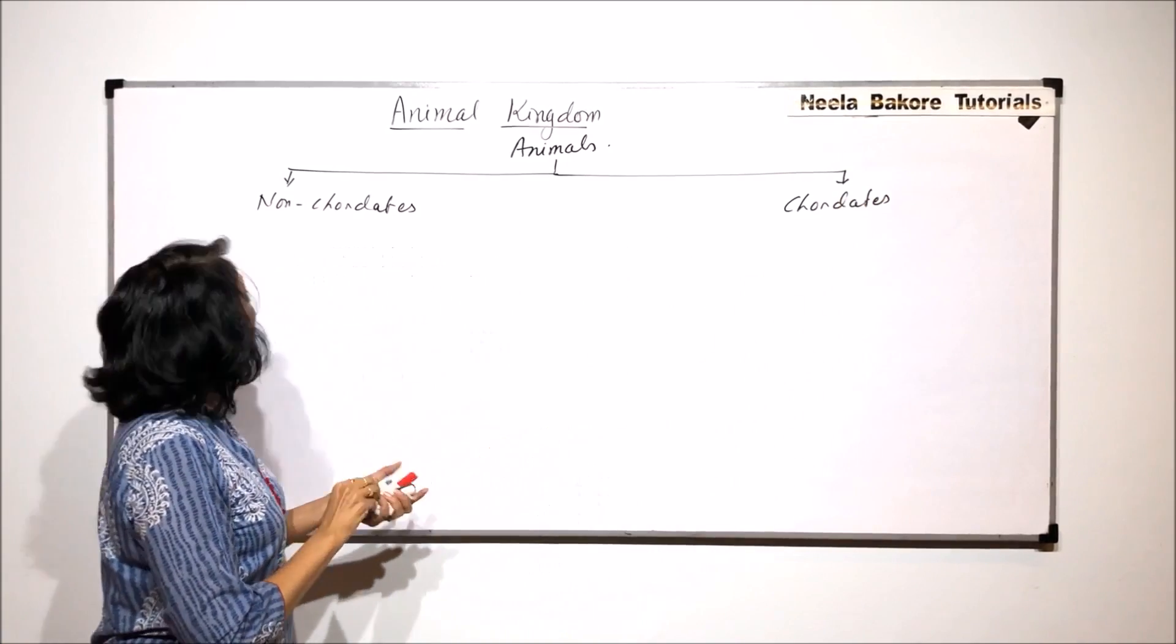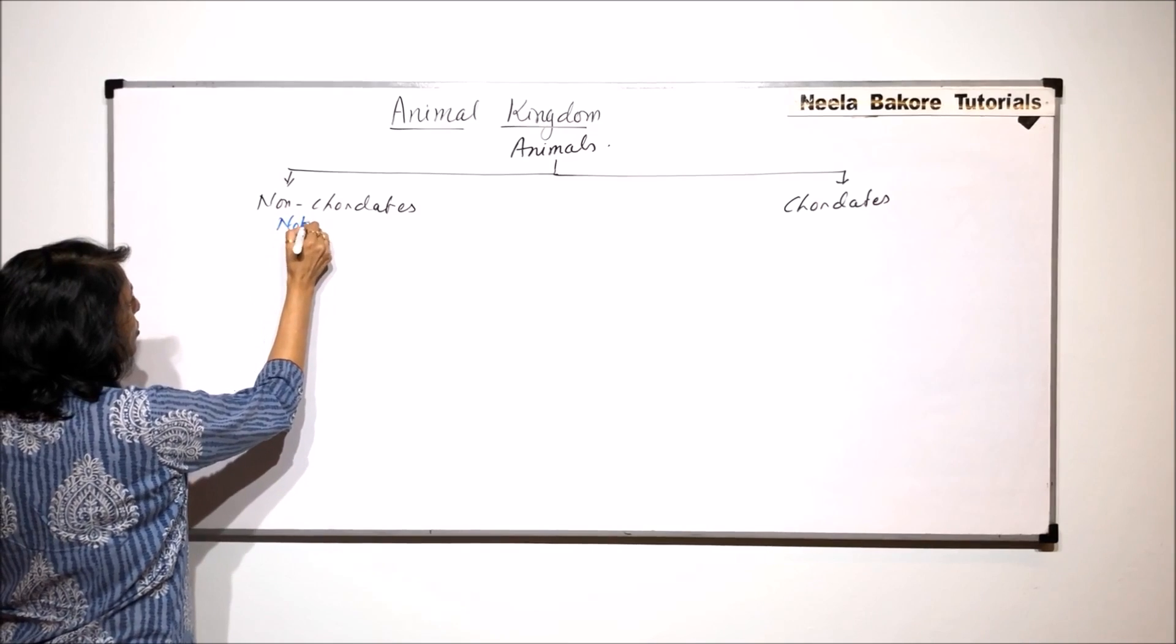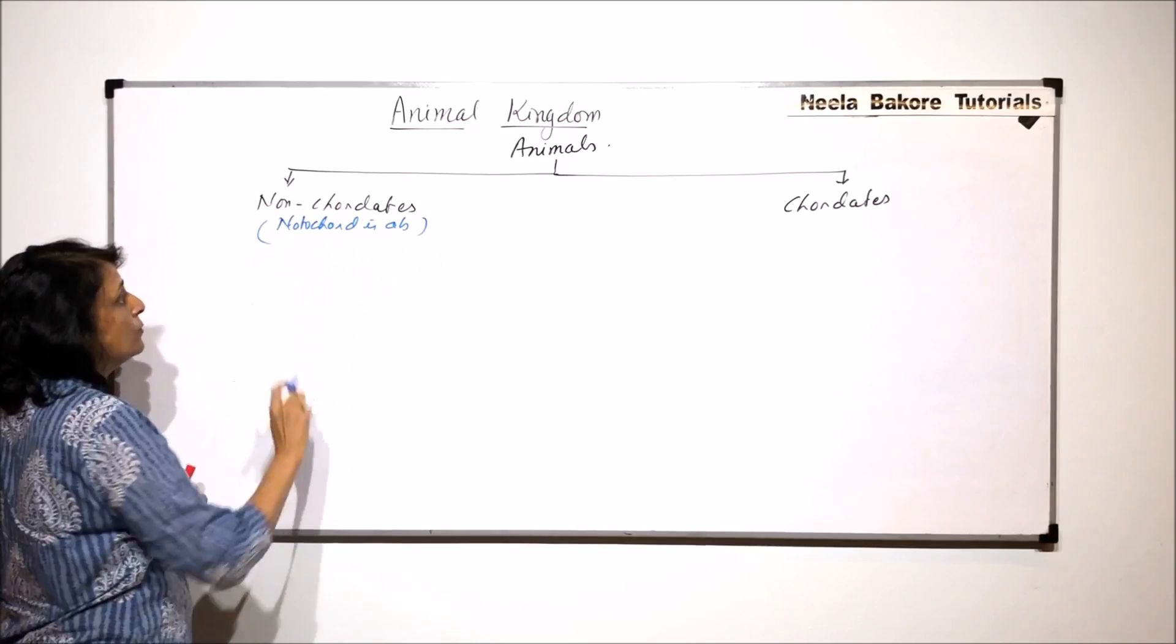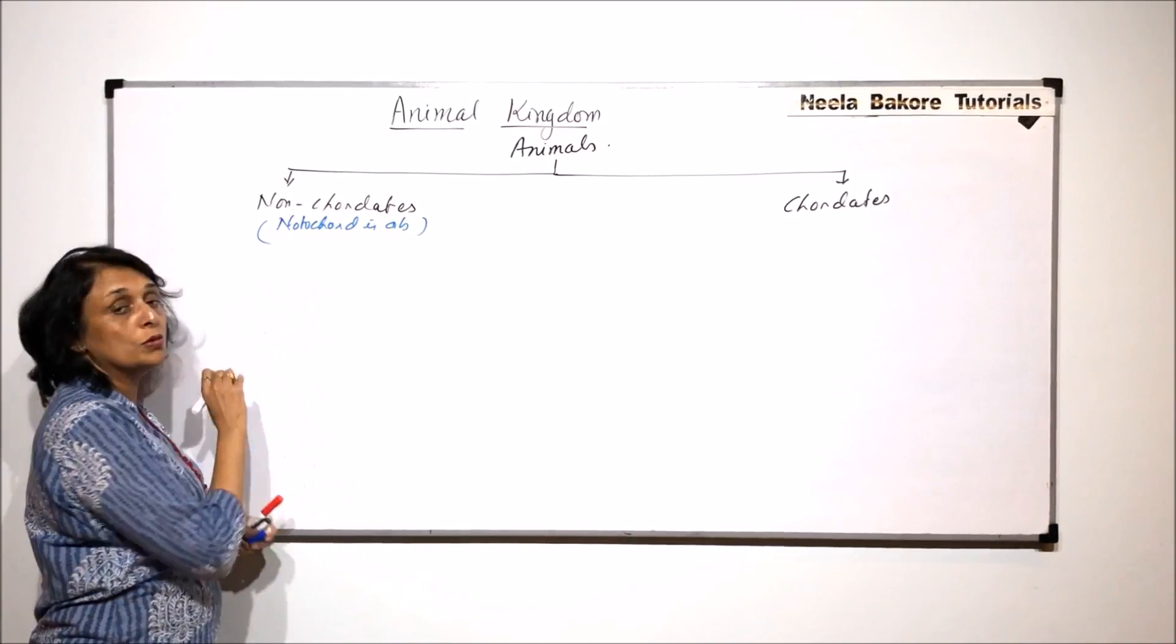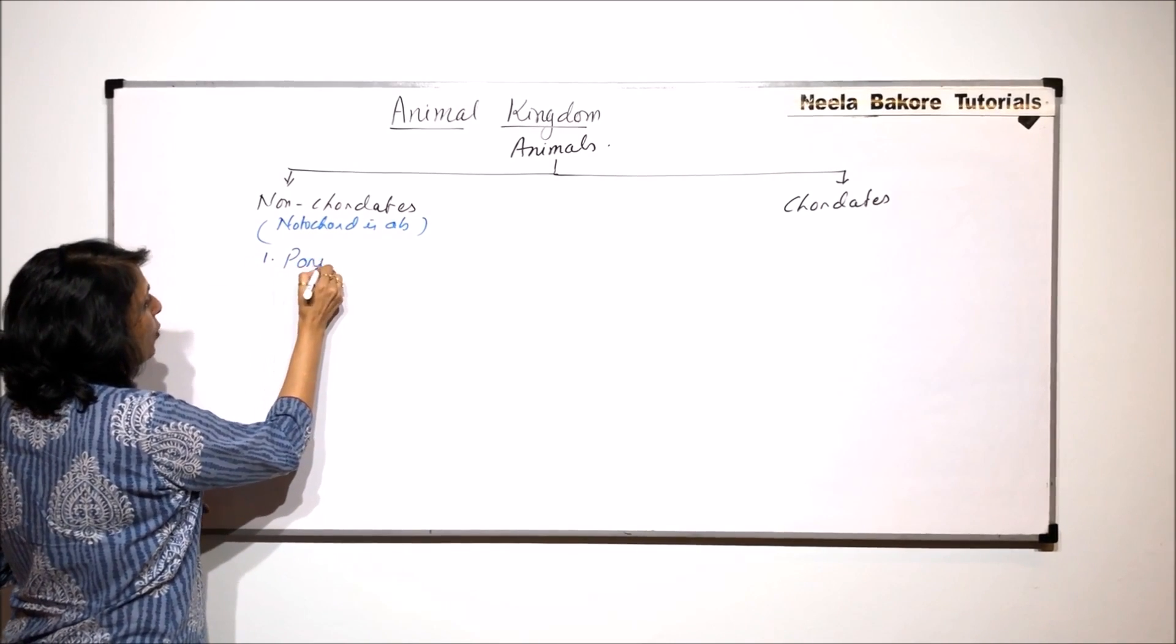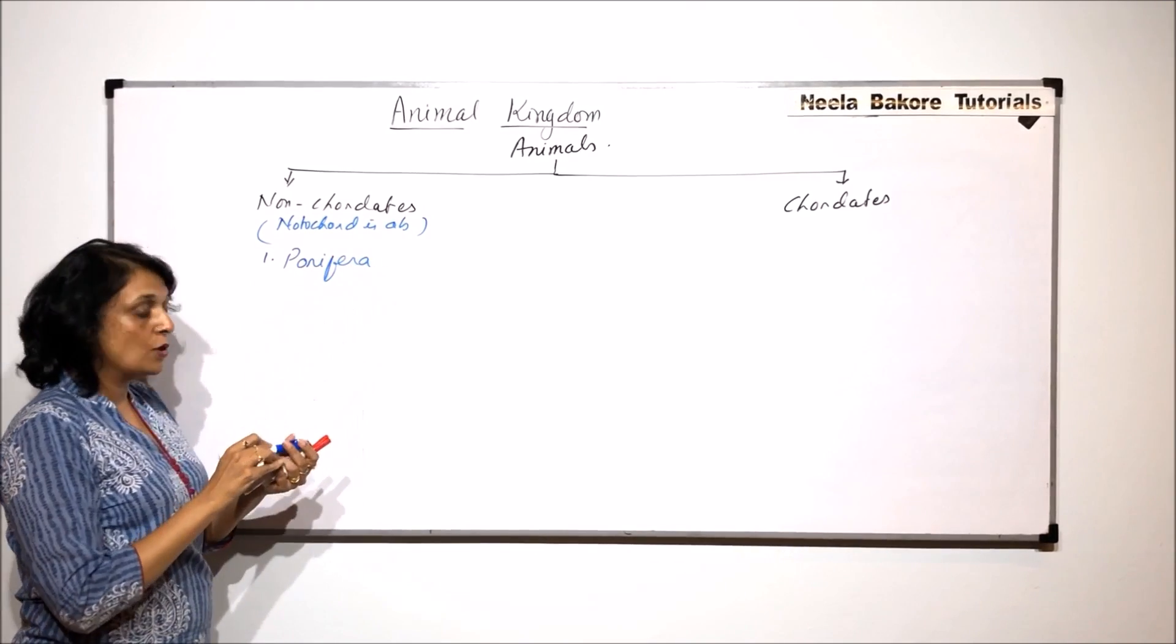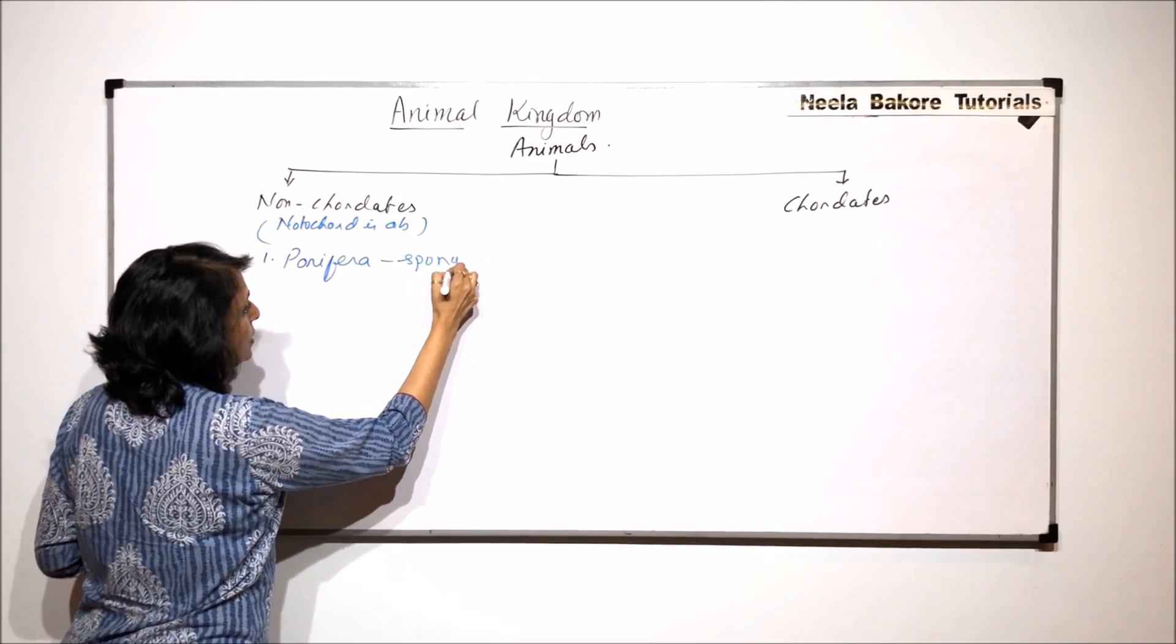So here we are talking about non-chordates where notochord is absent. Now these non-chordates are further divided or classified into phylums. The first phylum is Porifera, and in Porifera we include sponges.